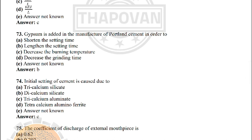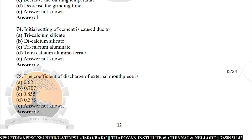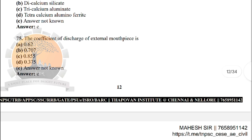Next: gypsum is added in the manufacturing of Portland cement in order to — the correct answer is: lengthen the setting time. Next: initial setting time of cement is caused due to — the correct answer is option C: tricalcium aluminate.